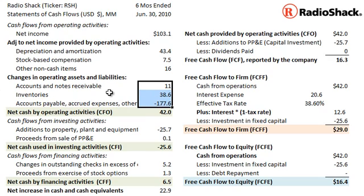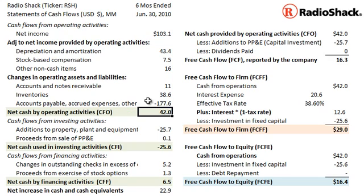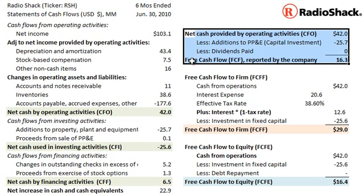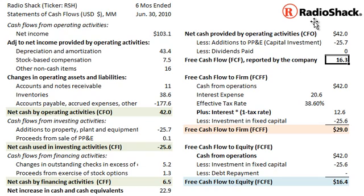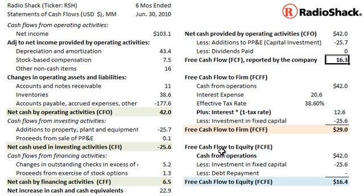These accounts reflect the changes to working capital, and my calculation here matches the reported number on the statement: starting with net income, adding back non-cash charges, and reflecting changes in working capital gets me to cash from operations — $42 million for the six-month period. Now, the two cash flow metrics I wanted to highlight. The first one the company reports as their free cash flow is $16.3 million: CFO less capital investments less dividends paid, which was zero. I put that there to highlight that when we talk about free cash flow, there are different definitions depending on who's using the term, so we must be very mindful of that.